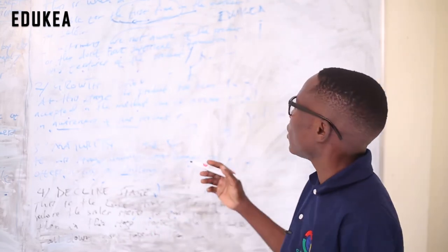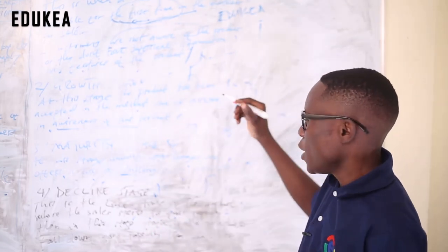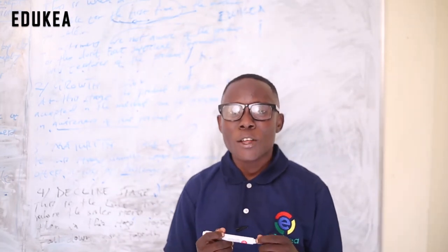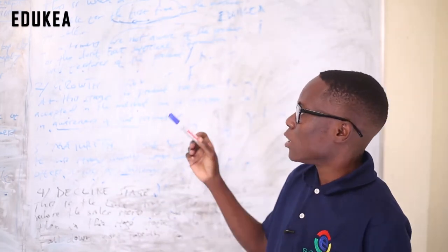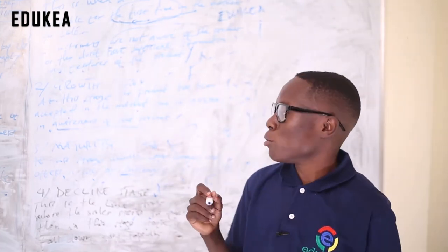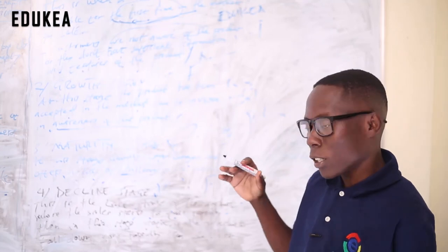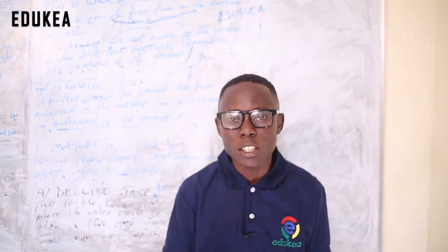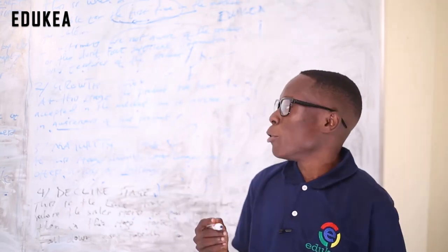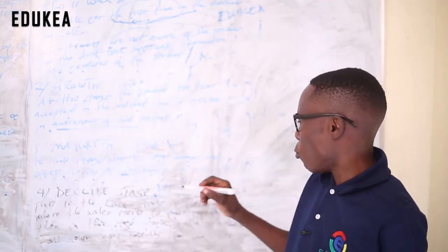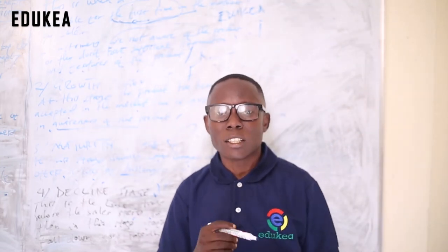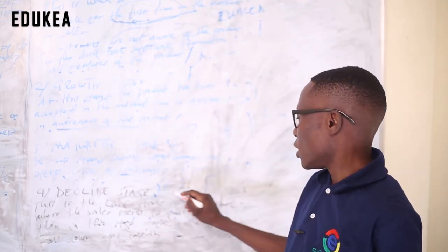So today in product life cycle we have covered its stages. We have now reached the end of our lesson on product life cycle. In the next session we will briefly explain market extension — how we can avoid the decline stage and what we can do to extend the life of our product and avoid decline.